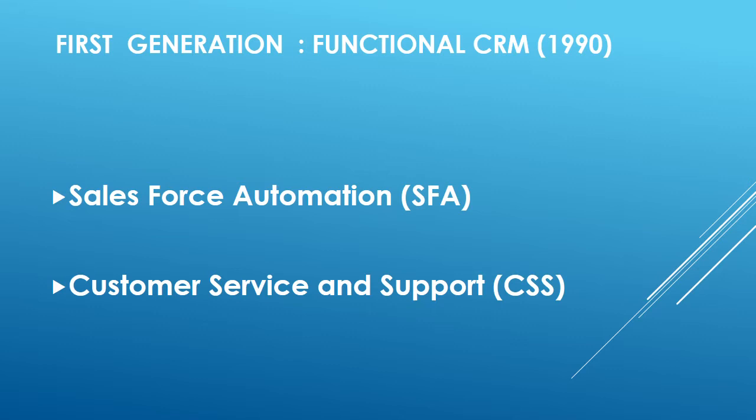The first generation — functional CRM — came into being around 1990. This stage had two major features: first, Salesforce Automation, also known as SFA, and second, customer service and support. Salesforce Automation is where building of databases for the sales team began — databases of the salesforce as well as for the salesforce, including customer profiles and prospective customers.